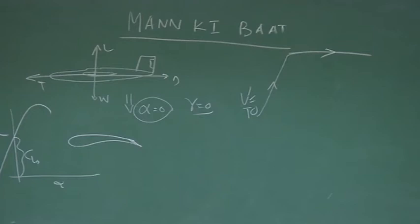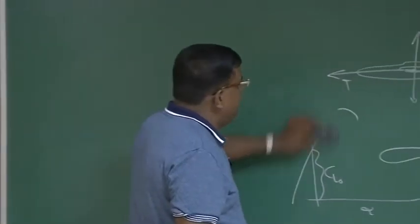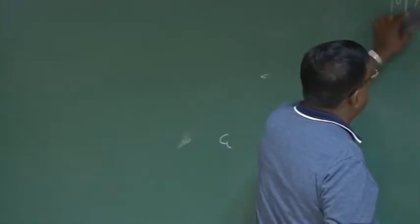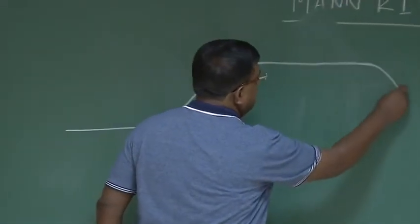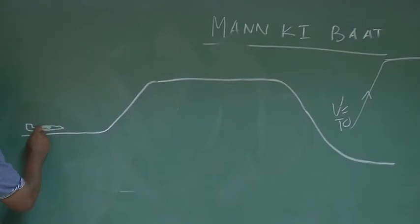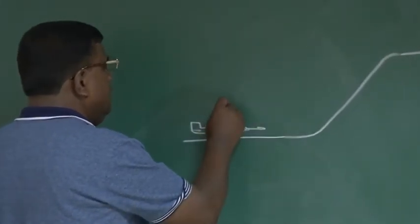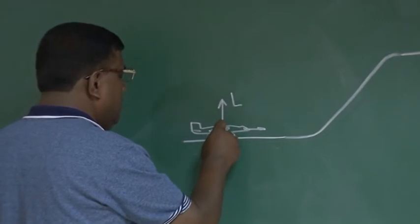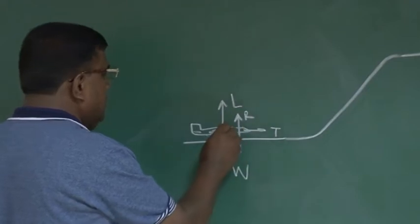I must share through this session of introspection whatever doubts I used to have — it may help. Now, revisiting my notes, you could see this is the typical representation: the wing, the tail, and the landing gear. During this phase we have lift, weight, some reaction R, thrust, and drag. We know by now that it has to accelerate from v equal to 0 to v take off, then it will do a rotation, a 3-second transition climb, and clear the screen height.